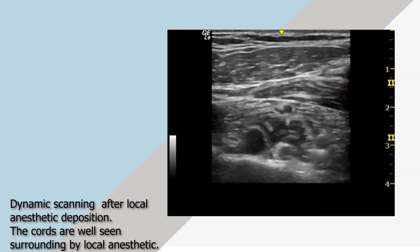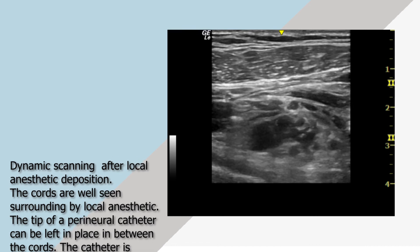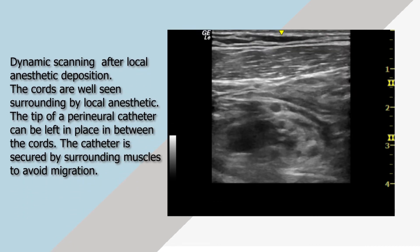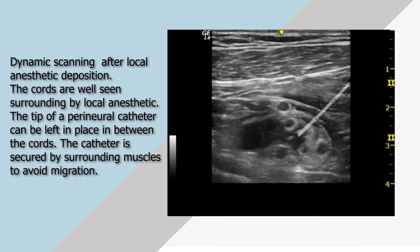Dynamic scanning after local anesthetic deposition shows the cords well seen and surrounded by local anesthetic. The tip of a perineural catheter can be left in place in between the cords. The catheter is secured by surrounding muscles to avoid migration.